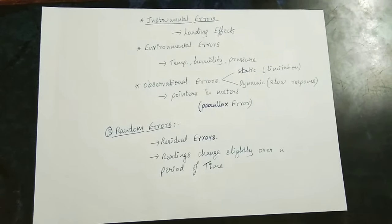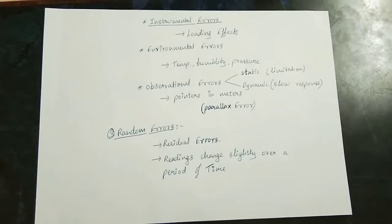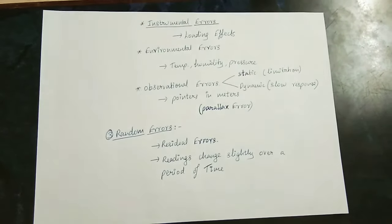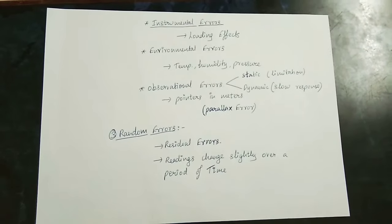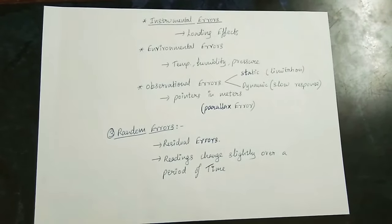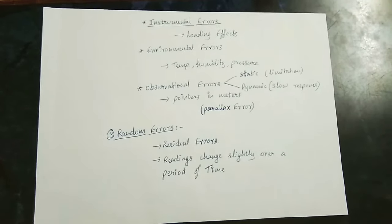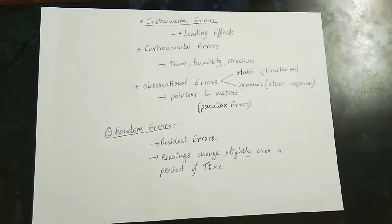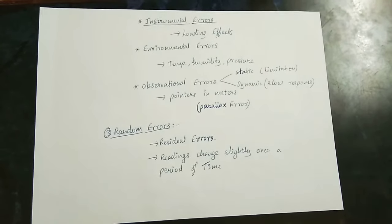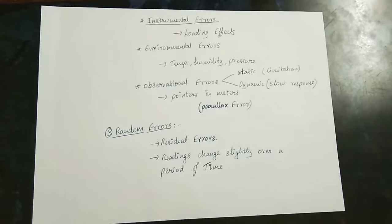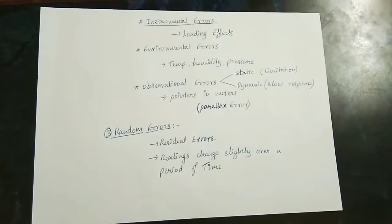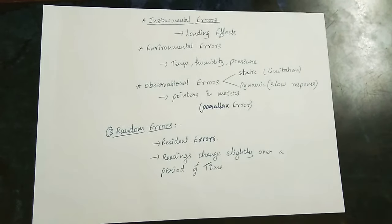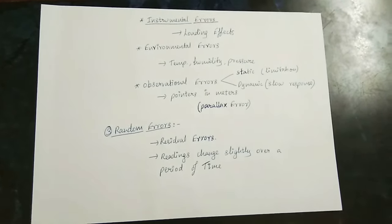Let's talk about Random Error, also called Residual Error. When you take a reading repeatedly, the values change — for example, if the true value is 5.0V, you might get readings of 4.9V, 4.8V, 5.1V, or 5.2V. There are no specific external changes causing this — this is a random or residual error.